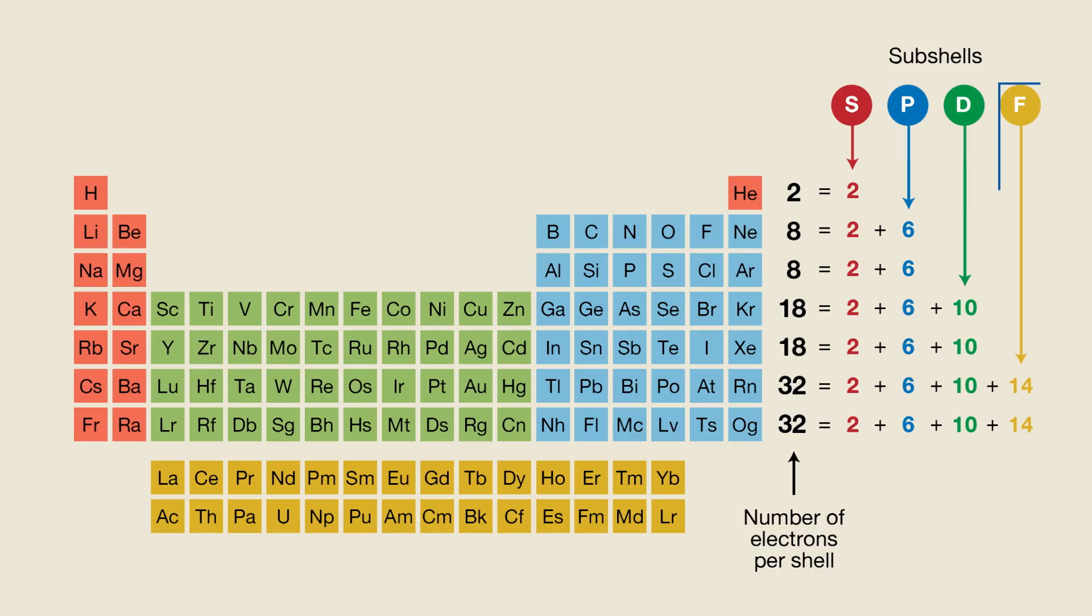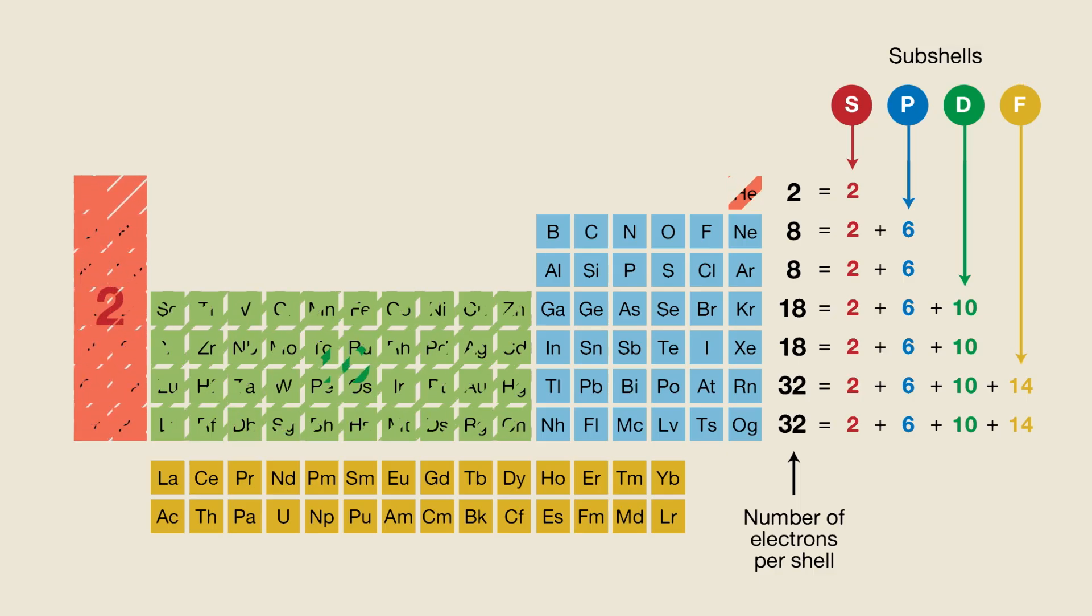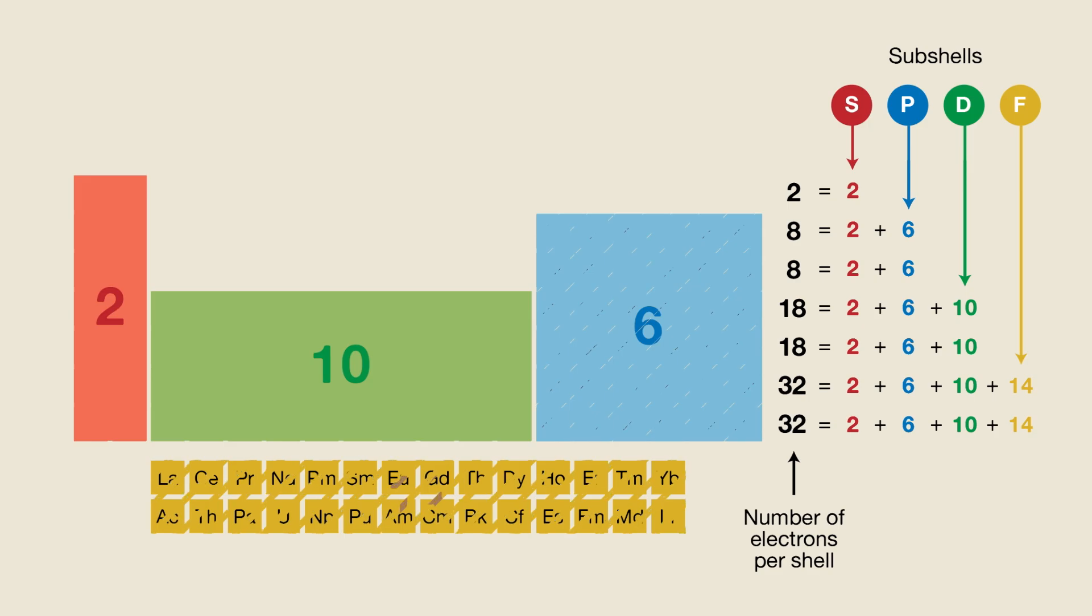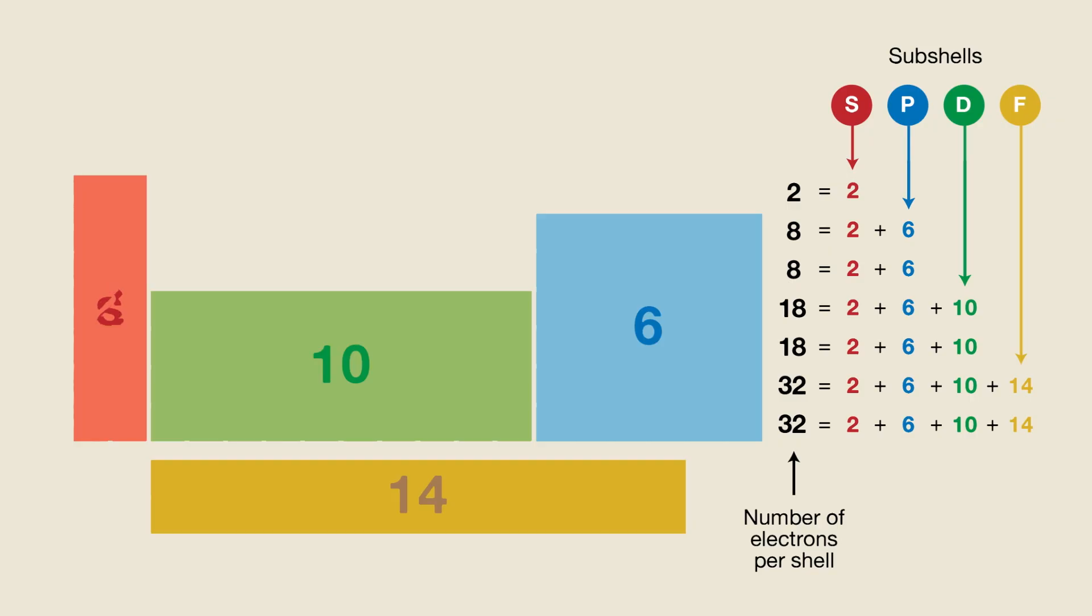So, altogether, the widths of the four blocks are 2, 6, 10, and 14. So, once again, we get a pattern that matches how electrons fit into their shells. And just like the four subshells are called S, P, D, and F, the four corresponding blocks on the periodic table are also called S, P, D, and F.